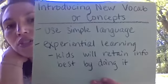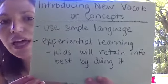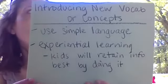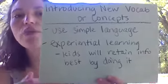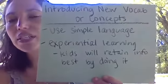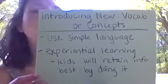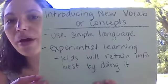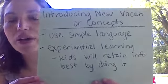When you introduce something new, you need to make sure you use simple language. Children learn best from doing something — that's what we call experiential learning. You want them to do the activity; they're more apt to remember the word or the concept if you're doing it while you're explaining it.